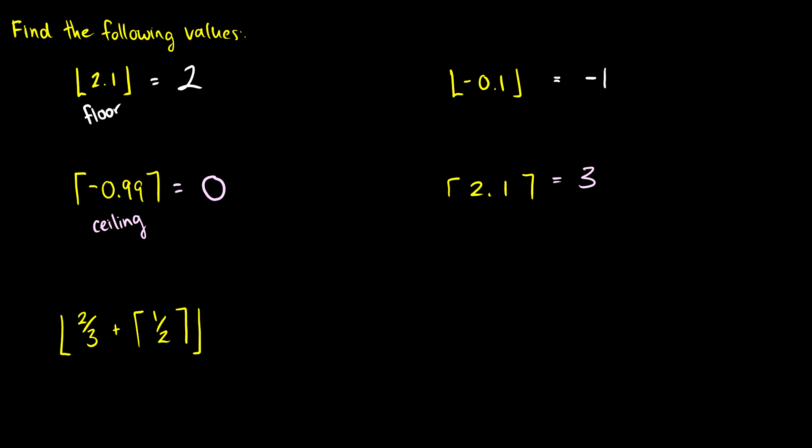So let's do a computation question here with a floor and a ceiling. We want the floor of 2 thirds plus ceiling of 1 half. So first we're going to do the ceiling of 1 half. So we're going to end up with the floor of 2 thirds plus, well, the ceiling of 1 half is going to be 1. So now we want the floor of 2 thirds plus 1. So this is just the floor of 1.6, roughly, and that is just 1.